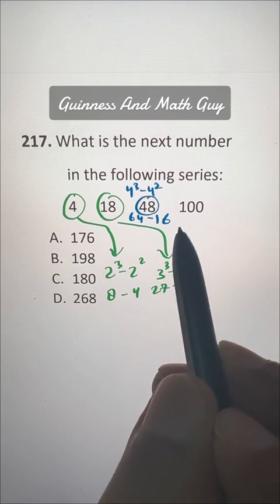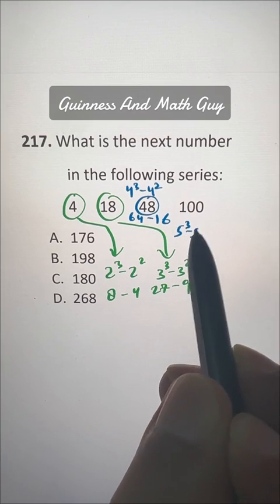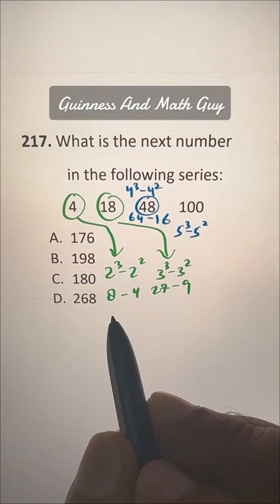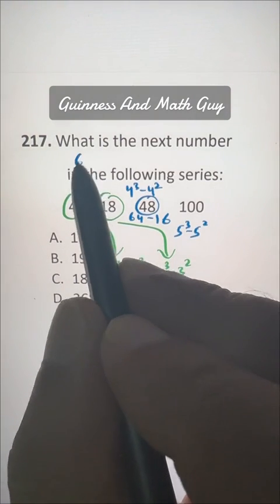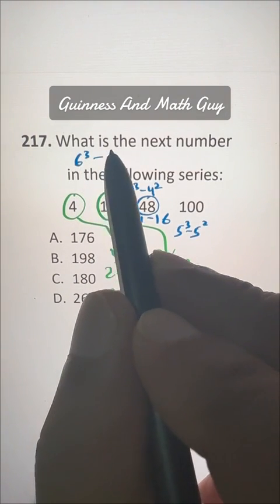And this is 5 cubed minus 5 squared. Now for the answer, we have to get 6 cubed minus 6 squared.